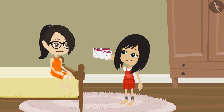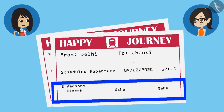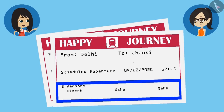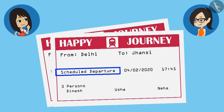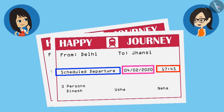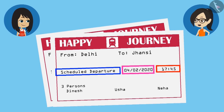Let's see what all is mentioned on the ticket. Look, it has Mummy's, Papa's and my name written on it. It is also written that this train will go from Delhi to Jhansi. And what is this written? 'Scheduled departure' — what is the meaning of this? I don't know. But the date is written in front of it, and something else is written as time, but it is not time — time must be written in the format of time.